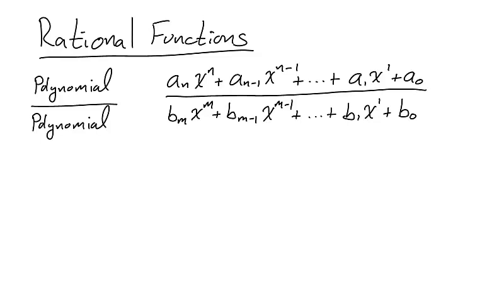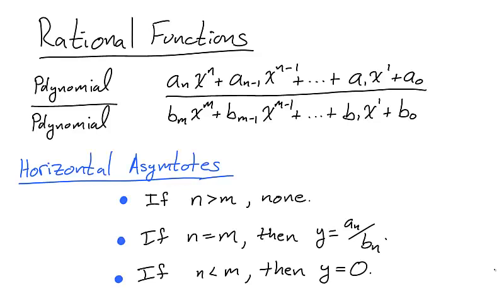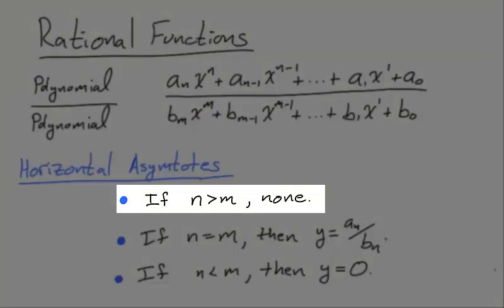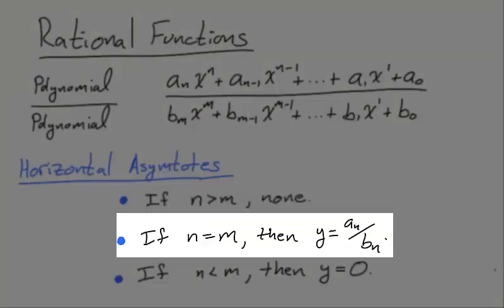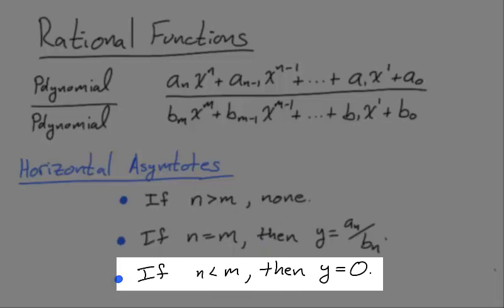Recall that a rational function has the form of a polynomial divided by a polynomial. Many of you learned in high school how to find the horizontal asymptote of a rational function, and the reasoning is supported by calculus. Let a_n be the leading coefficient and n the degree of the numerator polynomial, and b_m be the leading coefficient and m the degree of the denominator polynomial. If n is larger than m, there is no horizontal asymptote. If n equals m, the horizontal asymptote is y equals a_n over b_m. And if n is smaller than m, the horizontal asymptote is y equals 0.